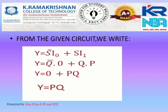Then, S is connected to Q and I1 is connected to P, so that gives Q dot P. Anything multiplied by 0 gives 0. Then QP can be written as PQ. From the given options, PQ is given. So the answer is Y is equal to PQ.